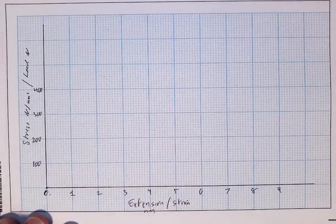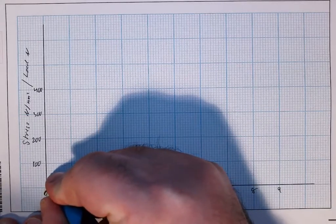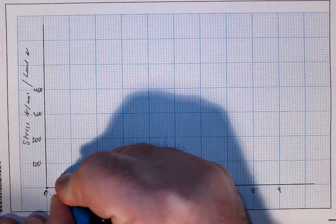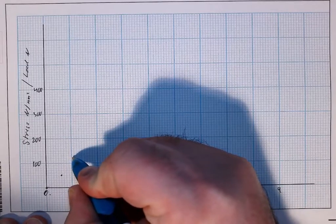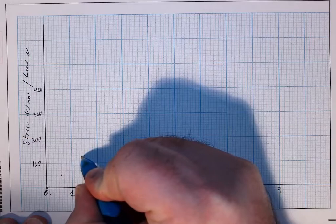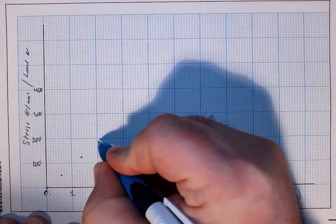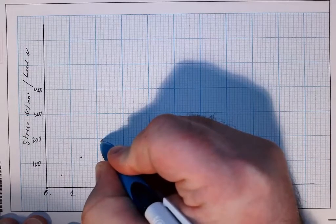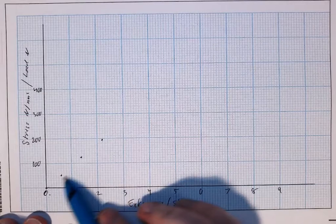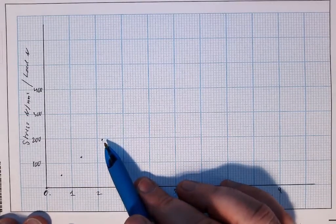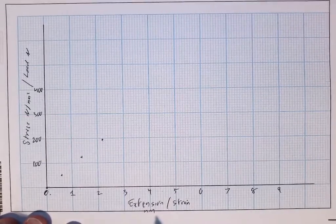Now you start plotting your points. So our first point is stress of 50 and strain is 0.6. Then it's 125 and 1.4. Then 195 and 2.2. Now you'll start to notice these lines are all pretty much going in a straight line and that's what you would expect to see in this first part of the graph where this section here is your elastic portion.